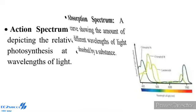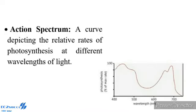Action Spectrum: A curve depicting the relative rate of photosynthesis at different wavelengths of light is called action spectrum. It shows that maximum photosynthesis occurs in the blue-violet and red part of the light. Action spectrum of photosynthesis corresponds closely to absorption spectrum of chlorophyll A and B, showing that these are the main photosynthetic pigments.